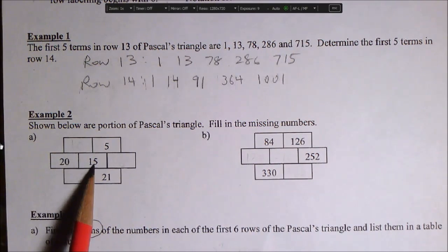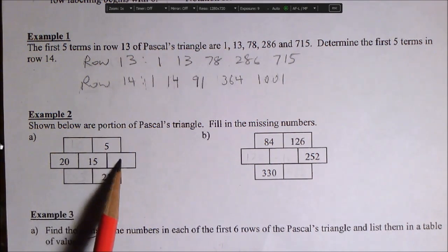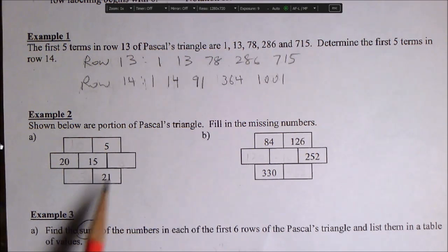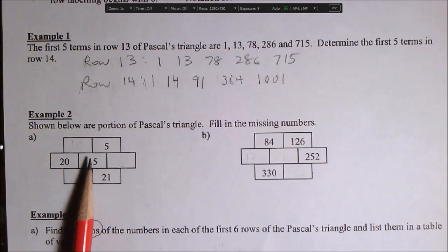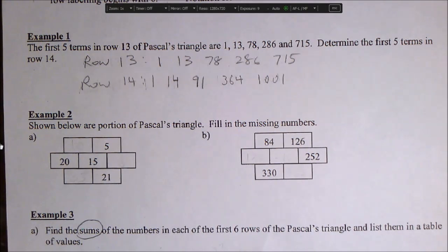Well, no, this one's even easier. 20 plus 15. And then what would go there if they must add to 21? So I'm going to pause the video at this point. Please try to complete A and B and come back and check your solution with me.